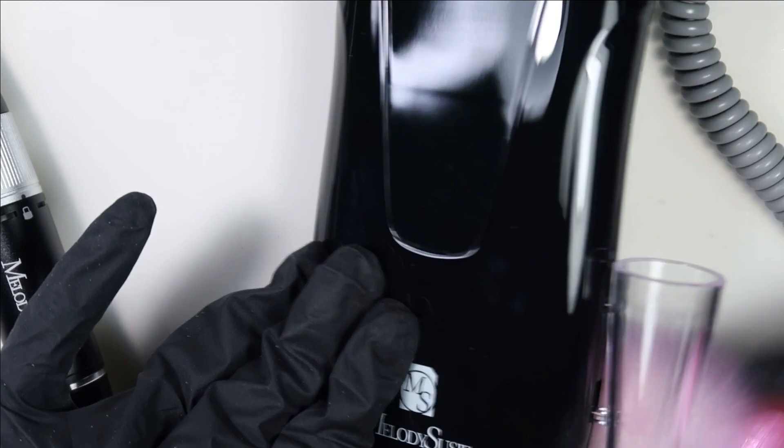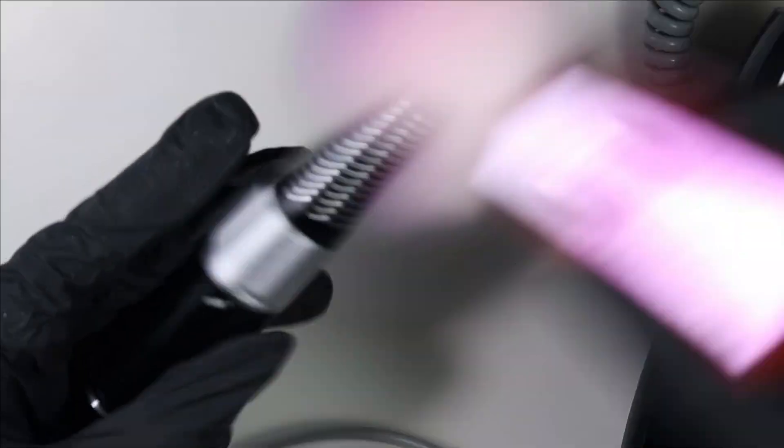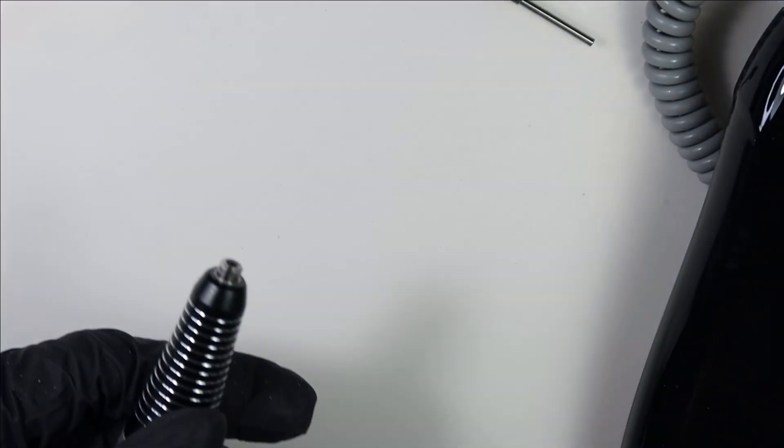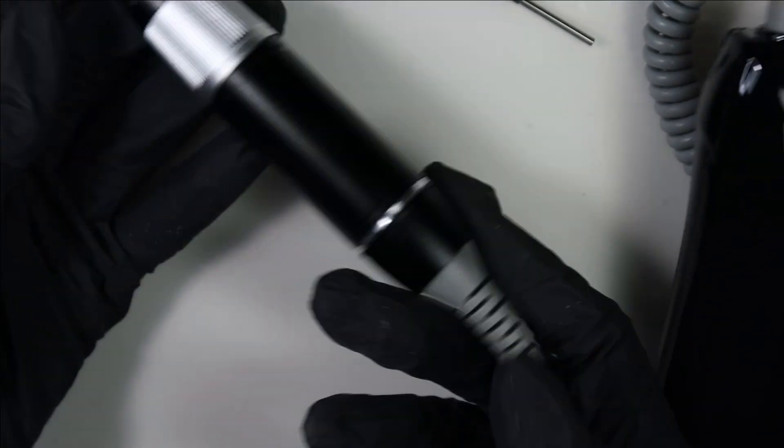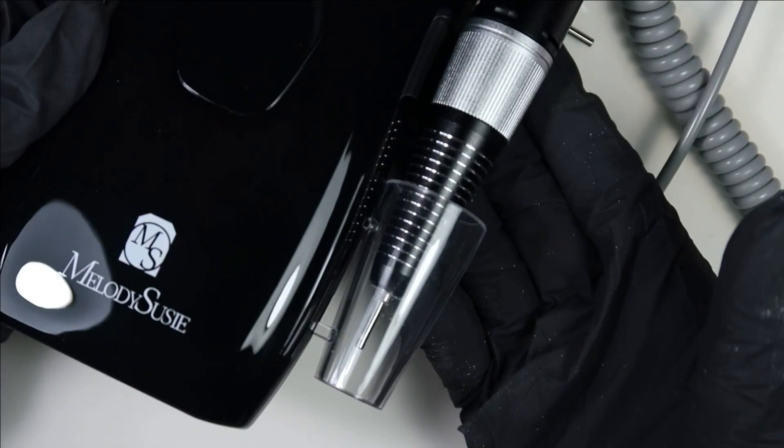Now I'm just going to dust the machine and everything so it's nice and clean. Even the hand piece is kind of dusty. Remove all the dust, remove the bit from here, and then put this piece so that it's nice and safe and secured. Then you put it back in the holder that it came with.